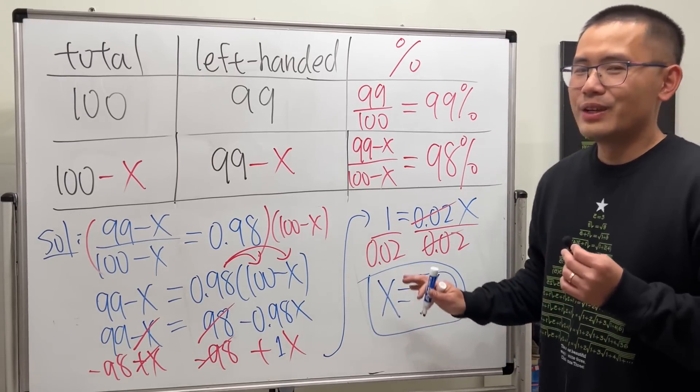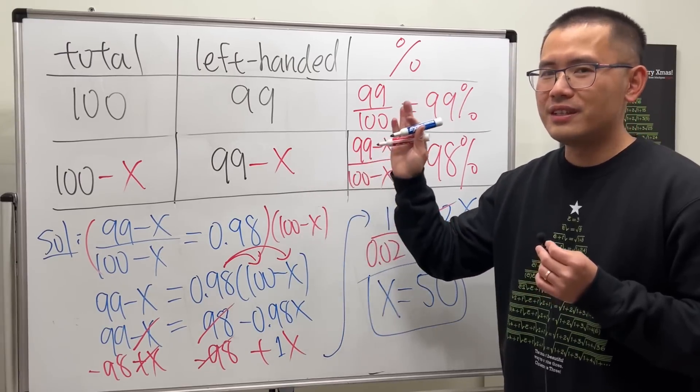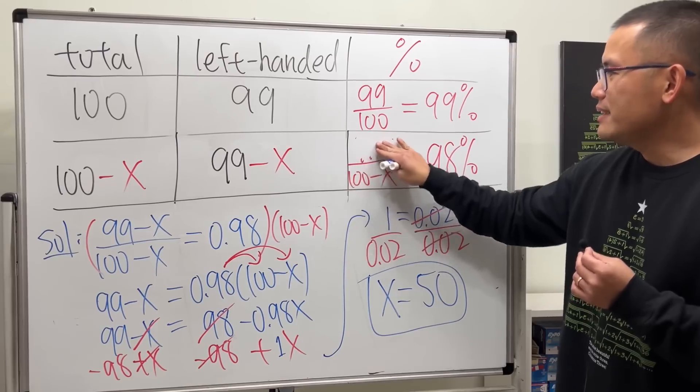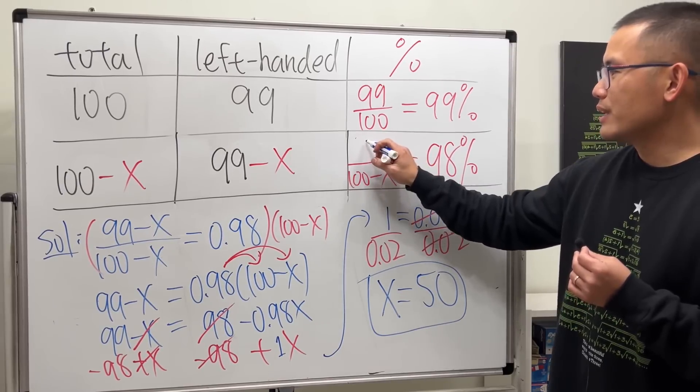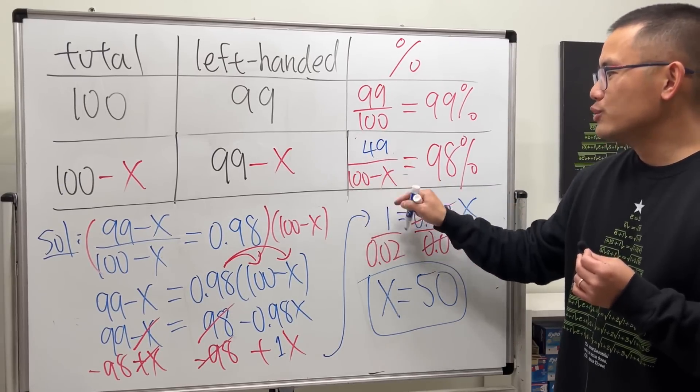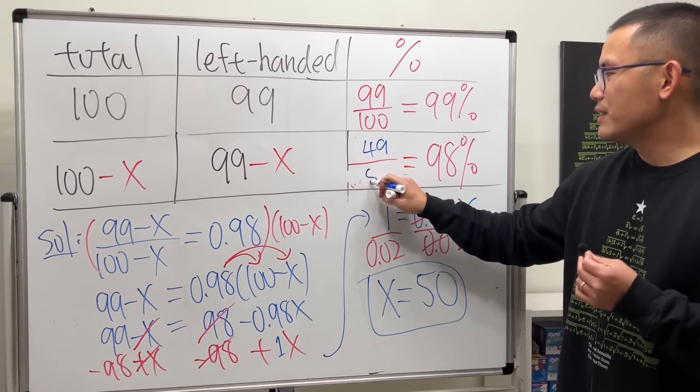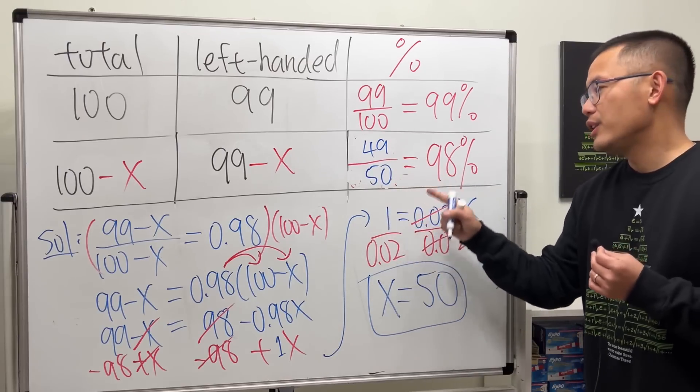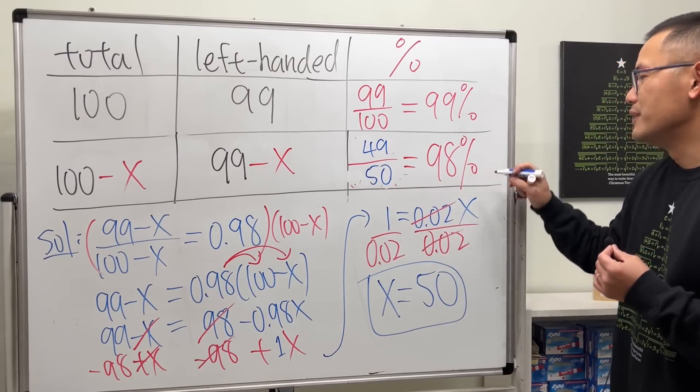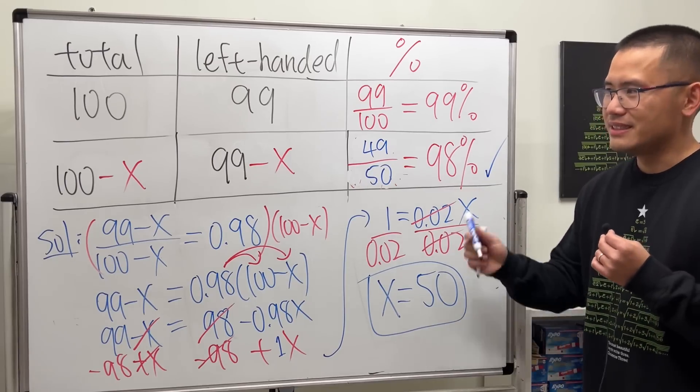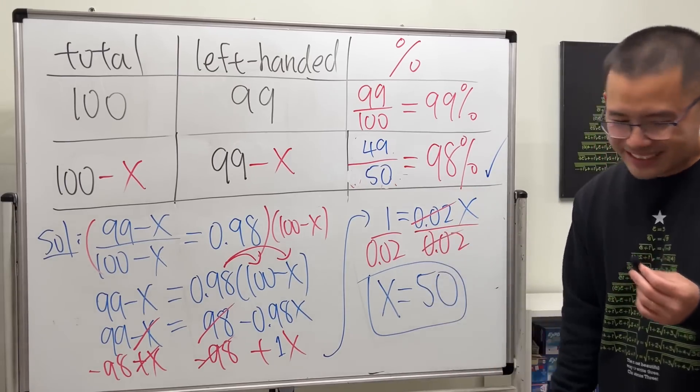Cancel, work this out, you end up with x equals 50. So that means we will have to remove 50 people from the room. 99 minus 50, you get 49. 100 minus 50, you get 50. Divide, you will get 0.98, which is exactly 98%. I think this is a very nice question. That's it.